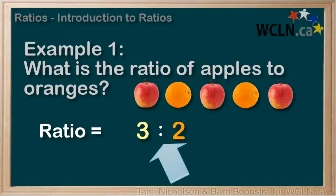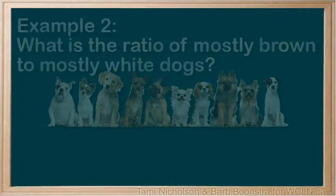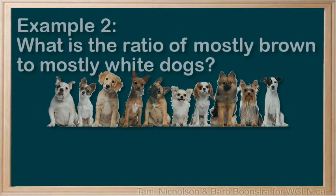So the ratio of apples to oranges — the comparison of the number of each — is 3 to 2. Notice that we put a colon in the middle to separate the two numbers in a ratio. Let's try another.